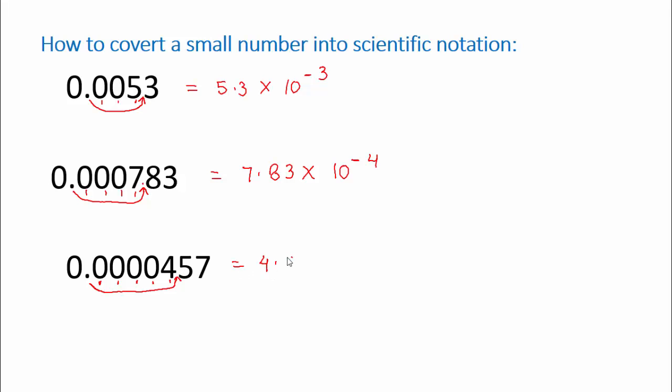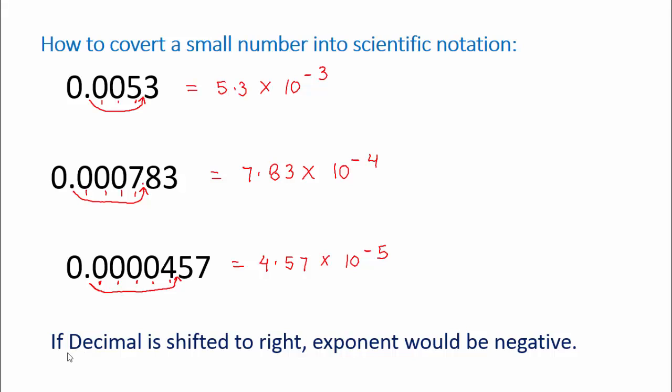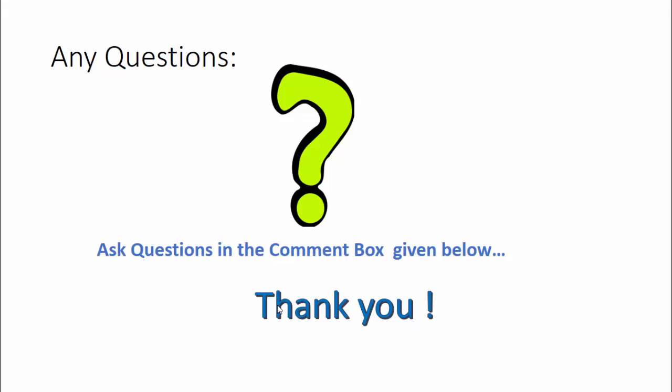So it will become 4.57 into 10 raised to the power minus 5. So the rule is, if decimal is shifted to the right, exponent would be negative.